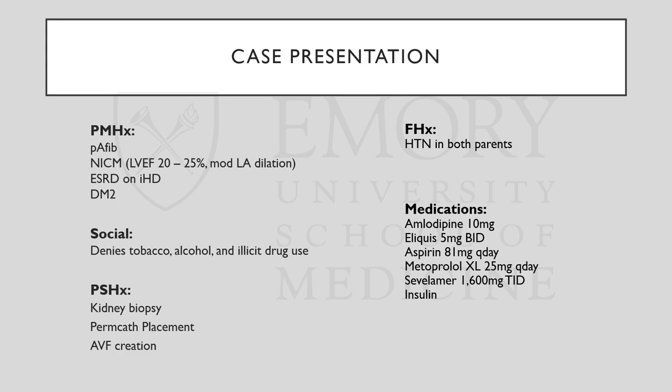Past medical history: paroxysmal AFib, non-ischemic cardiomyopathy with severely decreased EF of only 25%, with some moderate left atrial dilation. He also has ESRD and type 2 diabetes. Past surgical history includes ESRD and kidney failure-related surgeries, and family history of hypertension. Medications include amlodipine, Eliquis, aspirin, metoprolol, sevelamer, and insulin.